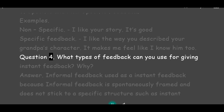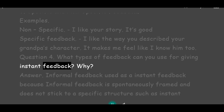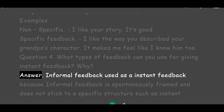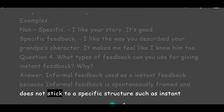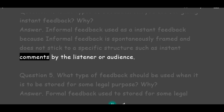Question 4: What type of feedback can you use for giving instant feedback? Why? Answer: Informal feedback is used as instant feedback because informal feedback is spontaneously framed and does not stick to a specific structure, such as instant comments by the listener or audience.